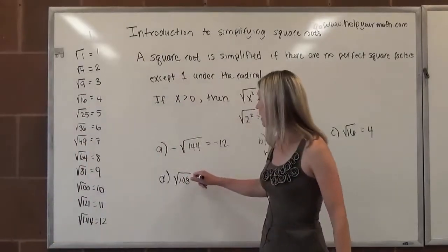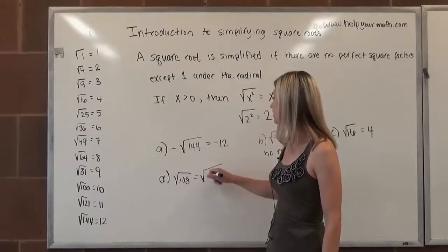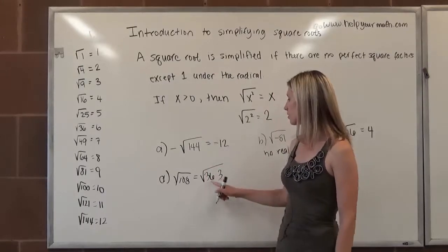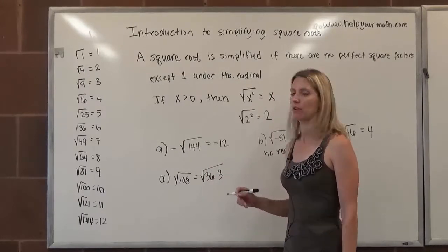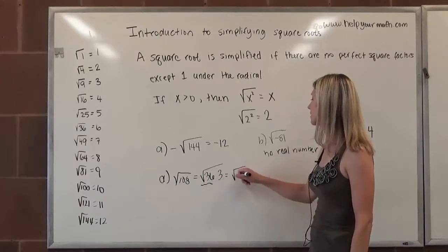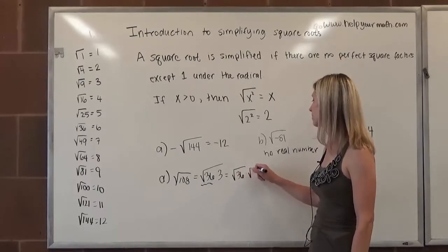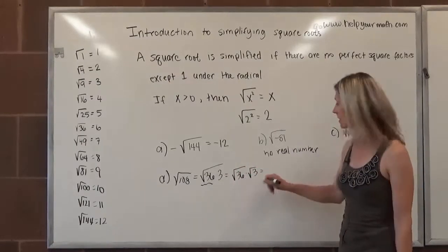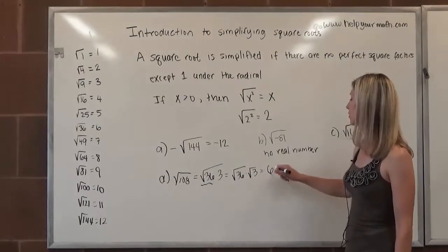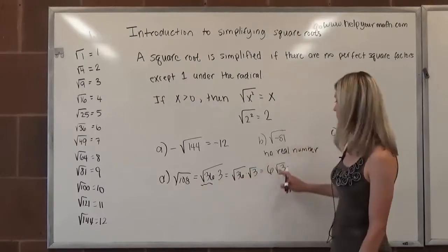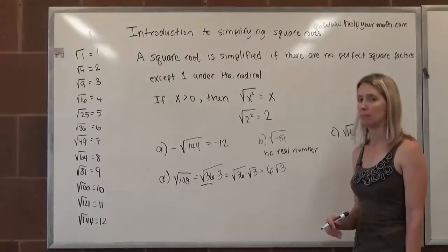So what we can do is we can rewrite the square root of 108 as the square root of 36 times 3. So if we divide 108 by 36, we get 3. Here's a perfect square factor. We can separate this and say, the square root of 36 times the square root of 3. The square root of 36, we can actually take that. That's 6. The square root of 3 is irrational. We leave it under the radical. So the square root of 108 is equivalent to 6 times radical 3.